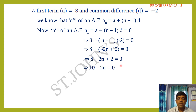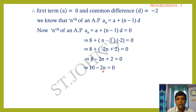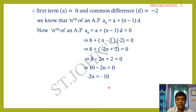Solution: Let a be the first term and d the common difference. From the condition: a + 8d = 6(a + d) = 6a + 6d. Rearranging: 8d − 6d = 6a − a, giving 2d = 5a, so d = 5a/2.